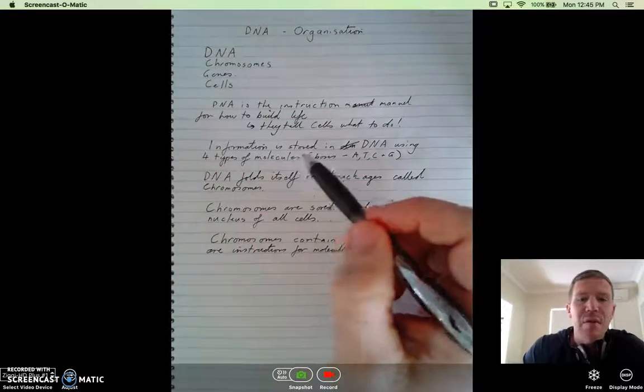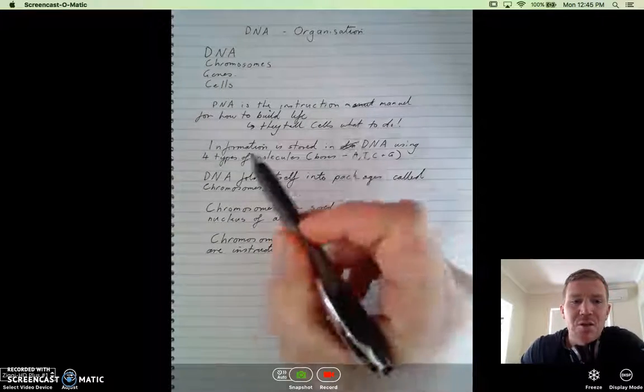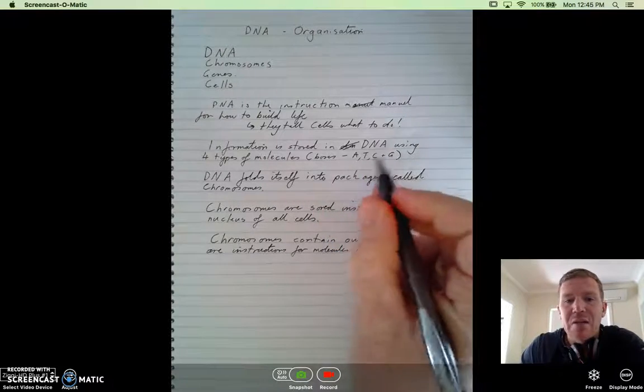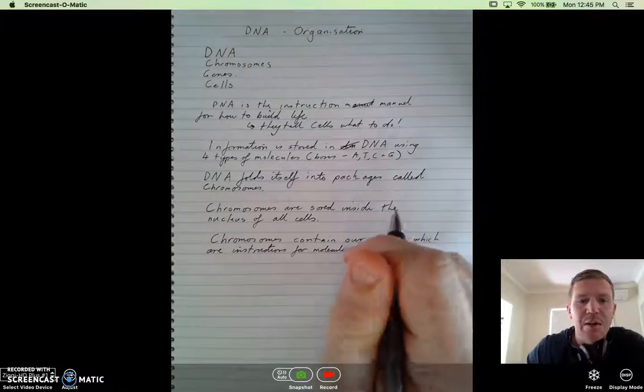And all this information is stored in DNA using four types of molecules, which we refer to as bases: A, T, C, and G. We'll learn about that a bit more later.